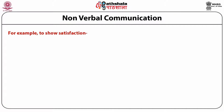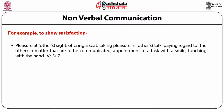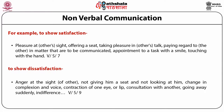If words and body language contradict each other in encoding a message, the impact of the message is weakened, or the receiver may become confused — for example, a reprimand accompanied with a smile. Sometimes in sensitive situations, when one cannot use words, the message can be conveyed by judicious use of expressions and gestures. For example, to show satisfaction: pleasure at another's sight, offering a seat, taking pleasure in another's talk, appointment to a task with a smile, touching with the hand. To show dissatisfaction: anger at the sight of another, not giving a seat, change in complexion and voice, contraction of one eye or lip, going away suddenly, or indifference.